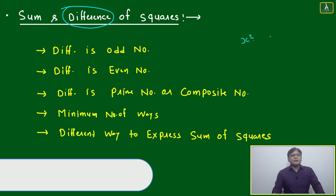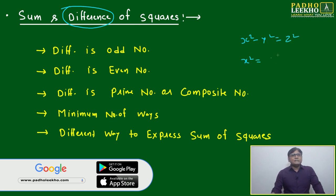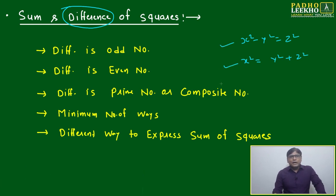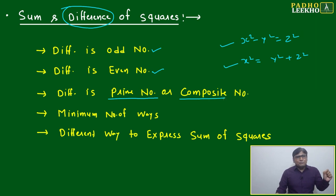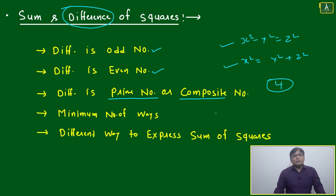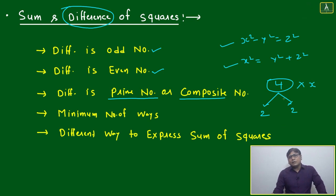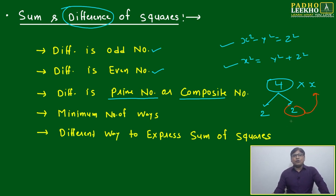Both sum and difference of squares are similar. If x² − y² = z², then x² = y² + z². Now the main issue is: if the difference between two square numbers is odd, how do you tackle it? If the difference is even, how do you tackle it? If it is prime or composite, how do you handle it? Here the role of 4 comes in, because 4 is the only number that can be factorized as 2 × 2, and multiplying 4 by any number — even or odd — can make it even by sparing one two.